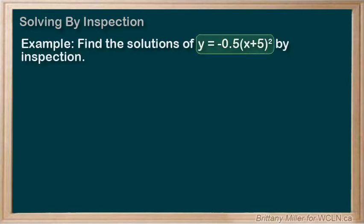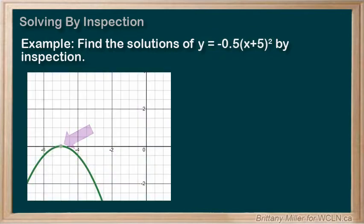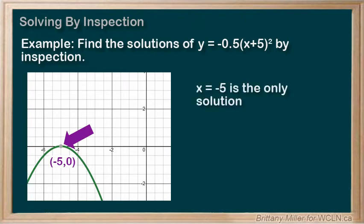What about the function -0.5(x+5)²? Well, this function only has one solution. Its vertex is the only point that touches the x-axis, so x equals -5 is the only x-intercept.